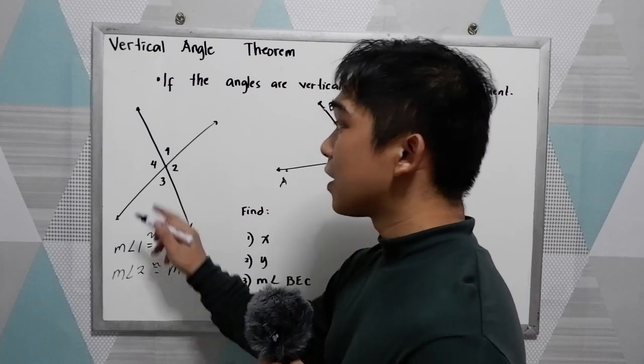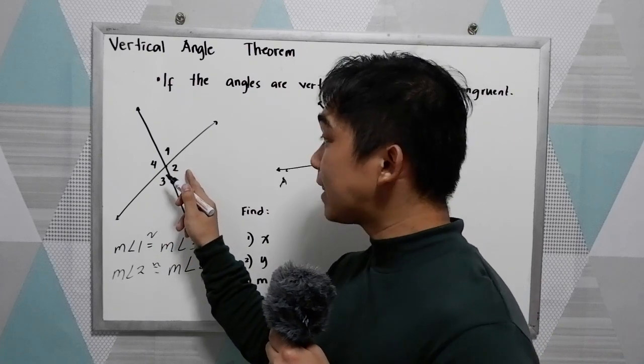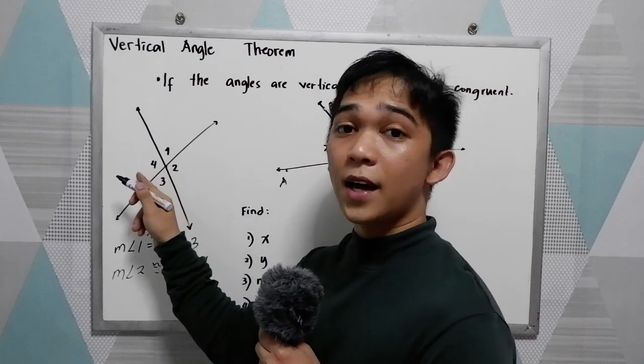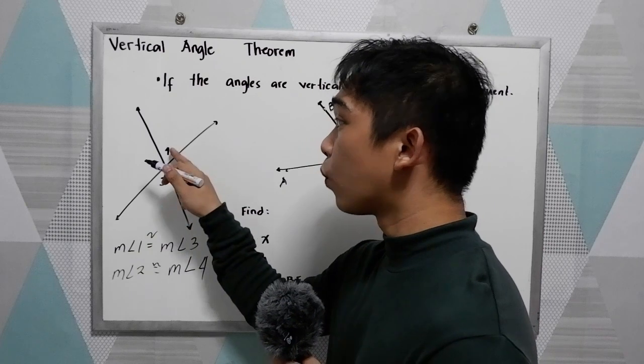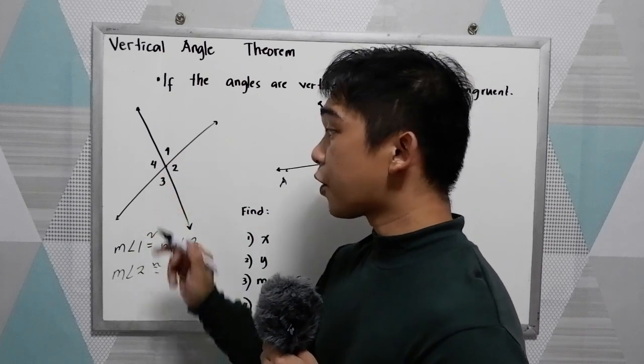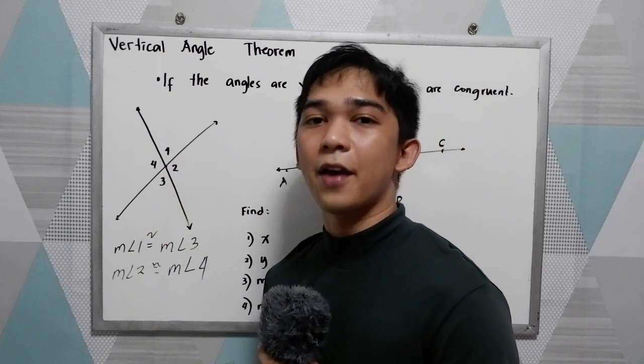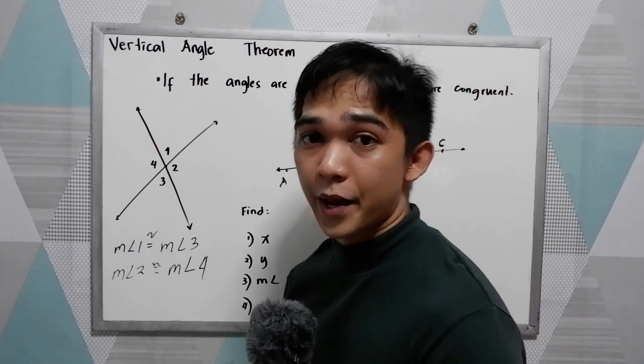That means if angle 2 is 95 degrees, therefore the measure of angle 4 is also 95. If the measure of angle 1 is 55, therefore the measure of angle 3 is 55. That is the vertical angle theorem.